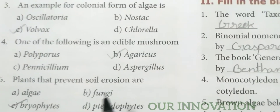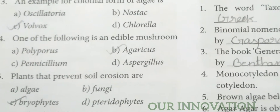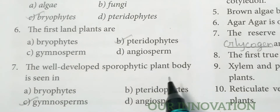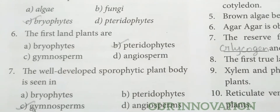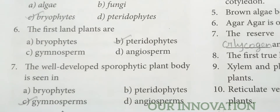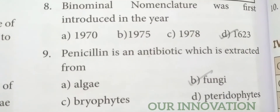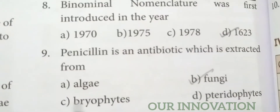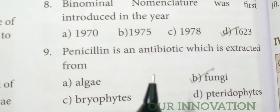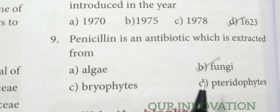Plants that prevent soil erosion are Bryophytes. The well-developed sporophytic plant body is seen in Gymnosperm. Binomial nomenclature was first introduced in the year 1623. Penicillin is an antibiotic which is extracted from fungi.